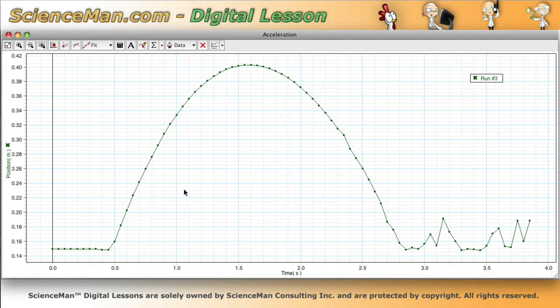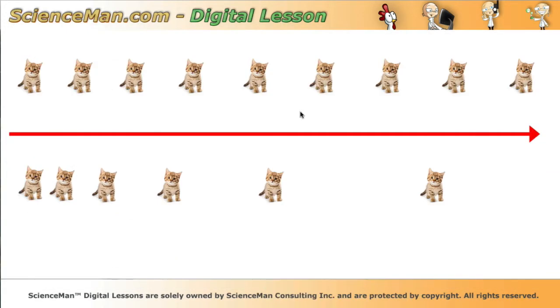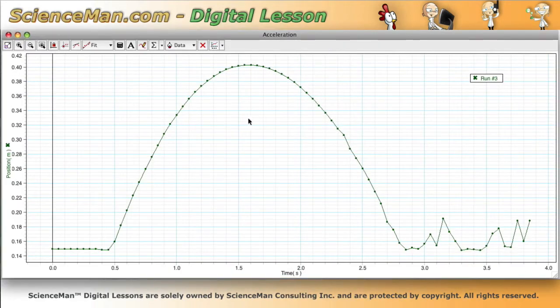We can also tell just by the shape of our graph. Because as this line on this graph curves, it's obvious that the position being measured here or noted on our scale, the position is changing less and less every unit of time. And again if we go back to our kittens we know that if the amount of ground covered every unit of time is changing, then we've got acceleration.